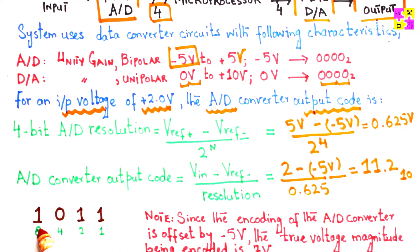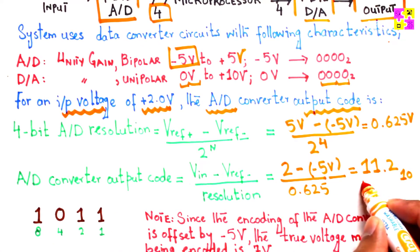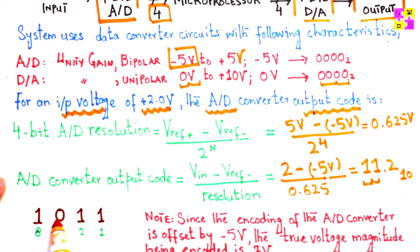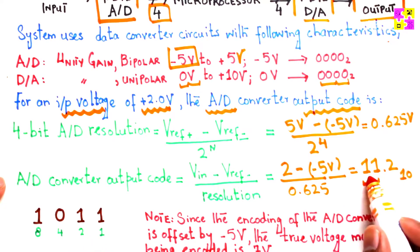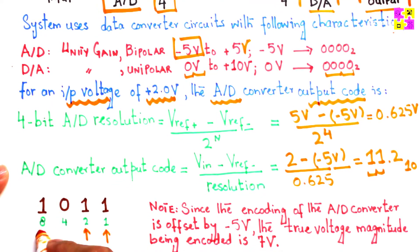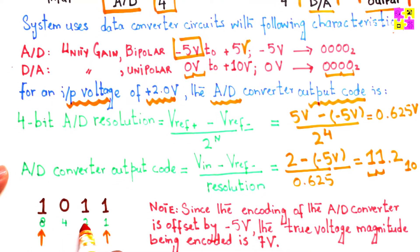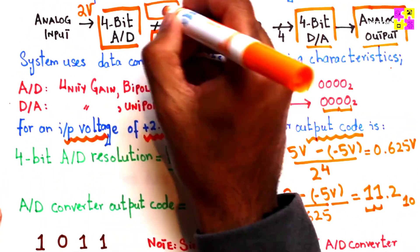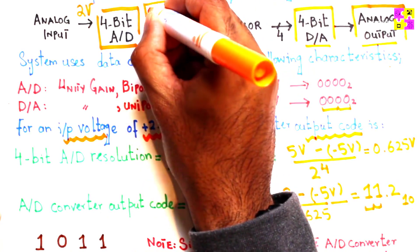Converting 11 (the integer part, discarding the fractional part) into binary gives 1011. Adding the magnitudes of the bits that are 1: 8 plus 2 equals 10, plus 1 equals 11. So the ADC will generate the output code 1011.